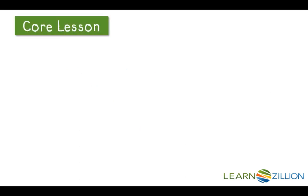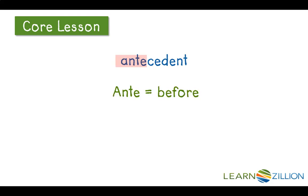In order to make sure that a pronoun and an antecedent agree, first you need to know what an antecedent is. If you look at the word 'antecedent,' 'ante' means before. An antecedent is the word or phrase before the pronoun that the pronoun is referring to.